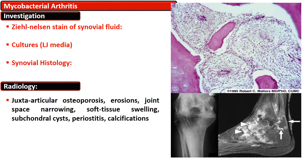Radiological features of mycobacterial tuberculosis arthritis include juxta-articular osteoporosis, erosion, joint space narrowing, soft tissue swelling, subchondral cysts, periostitis, and areas of calcification.